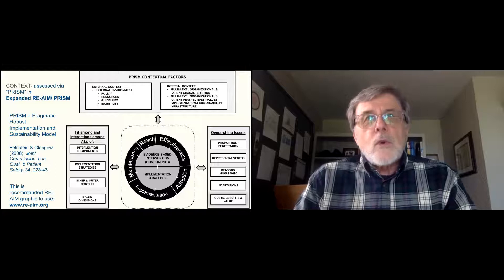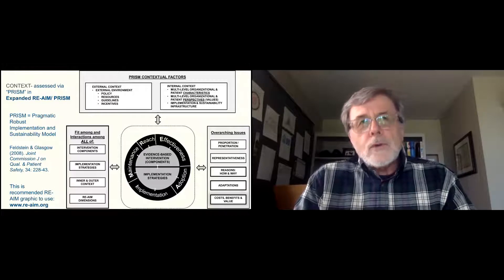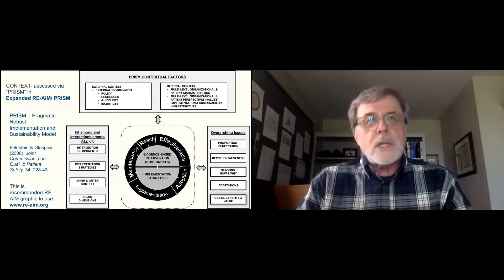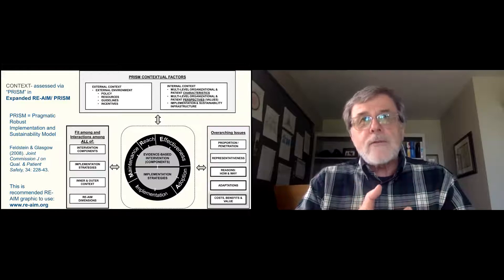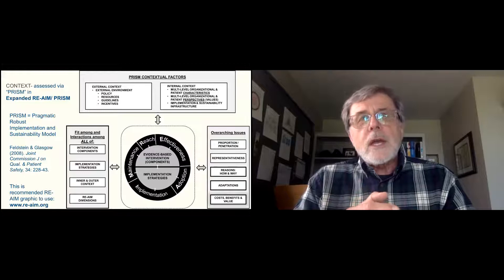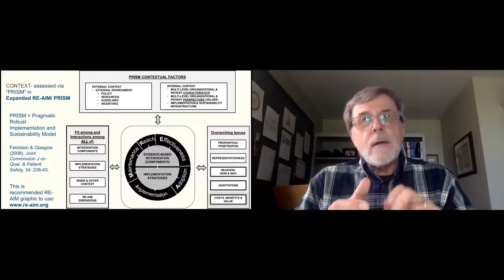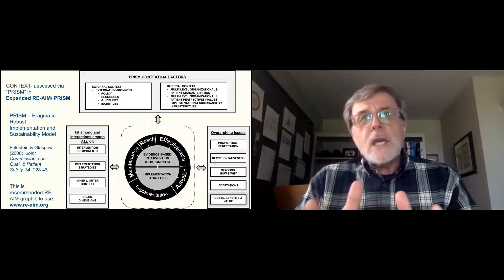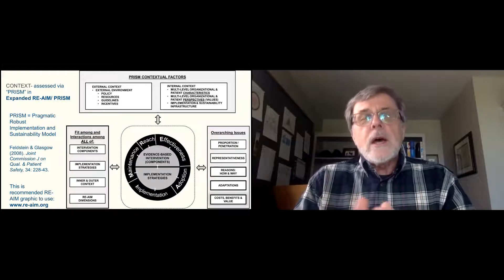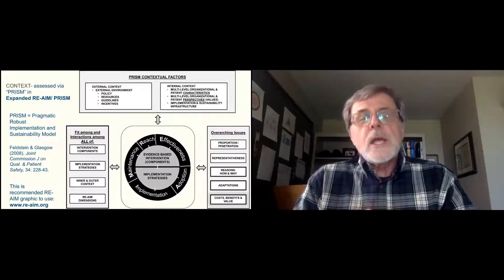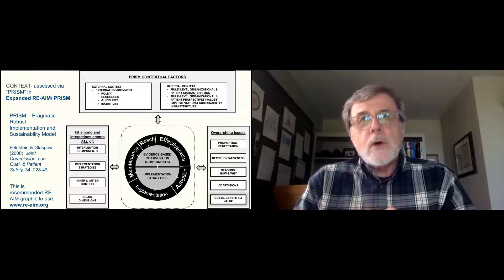The first thing we did was work with a group over time through several different types of meetings and online interactions with patients, patient advocates, and clinicians in primary care — different types of clinicians — along with researchers to identify the key issues. Things that rose to the top were tobacco use, physical activity, depression, healthy eating, and stress. We ended up with a total of 11 issues, then tried to review the literature and come up with pragmatic measures that could be collected — very brief but relatively face valid and actionable for primary care.